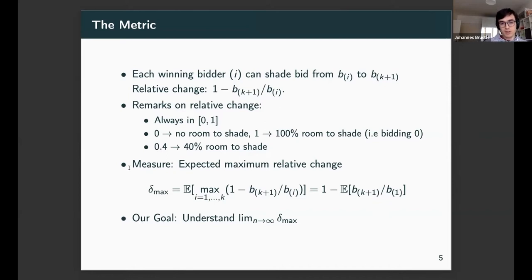What we measure in the end is the expected maximum relative change, denoted delta_max, which is the expectation of the maximum overall winning bidders of this relative change quantity. The max is obtained by i equals 1, the bidder with the largest bid. This turns out to be 1 minus expectation of b_{K+1} over the largest bid. Our goal is to understand what happens to delta_max as n goes very large.